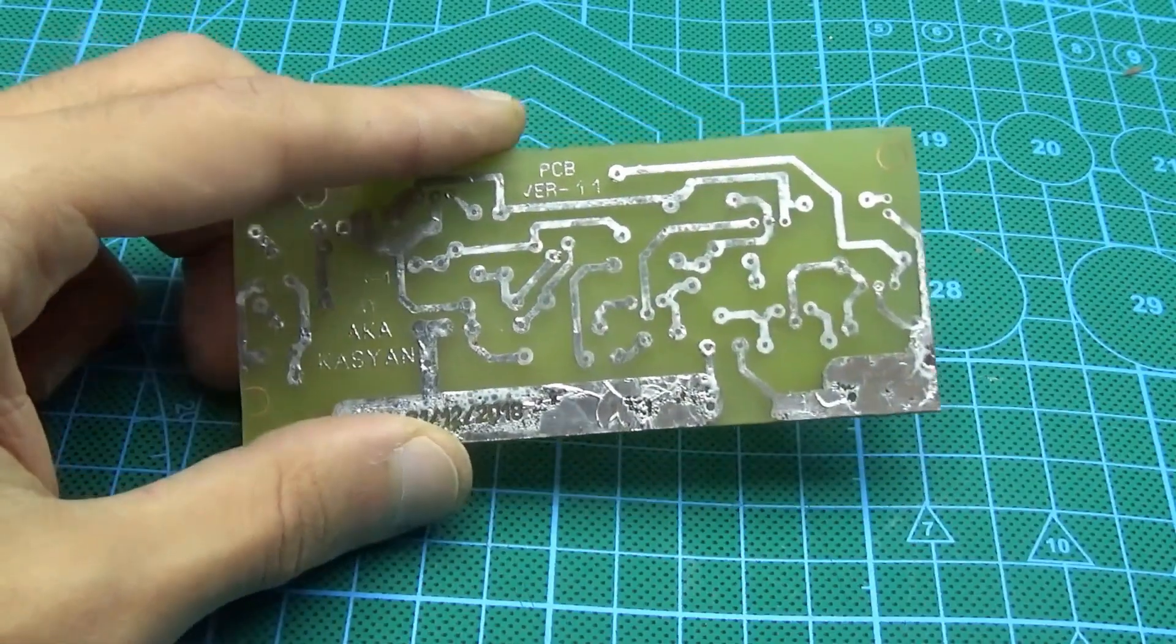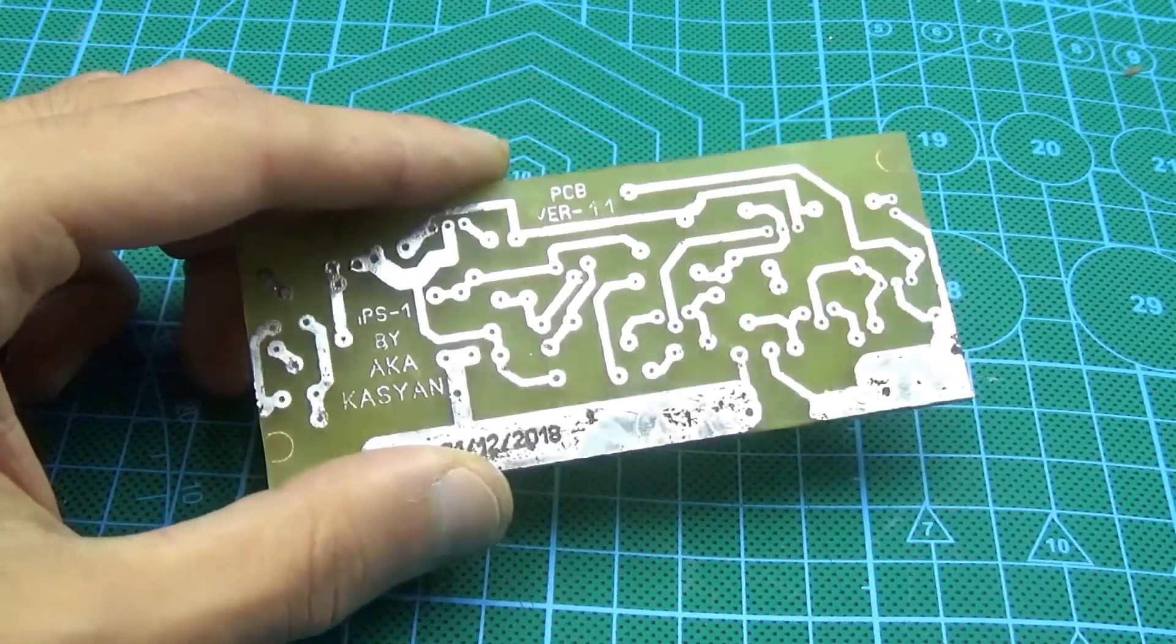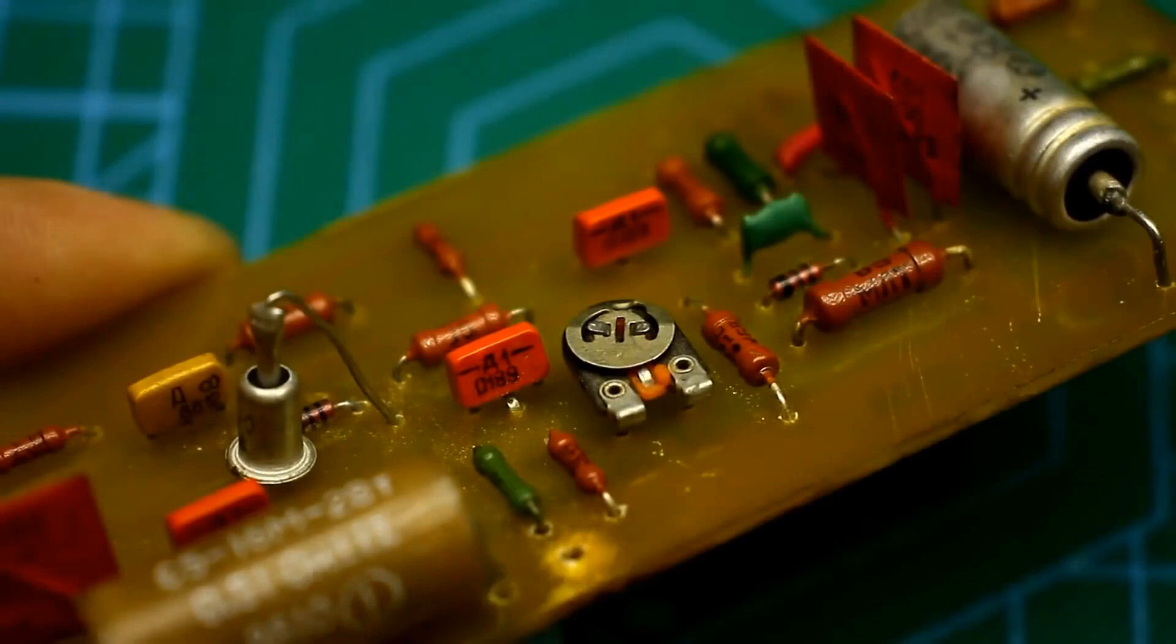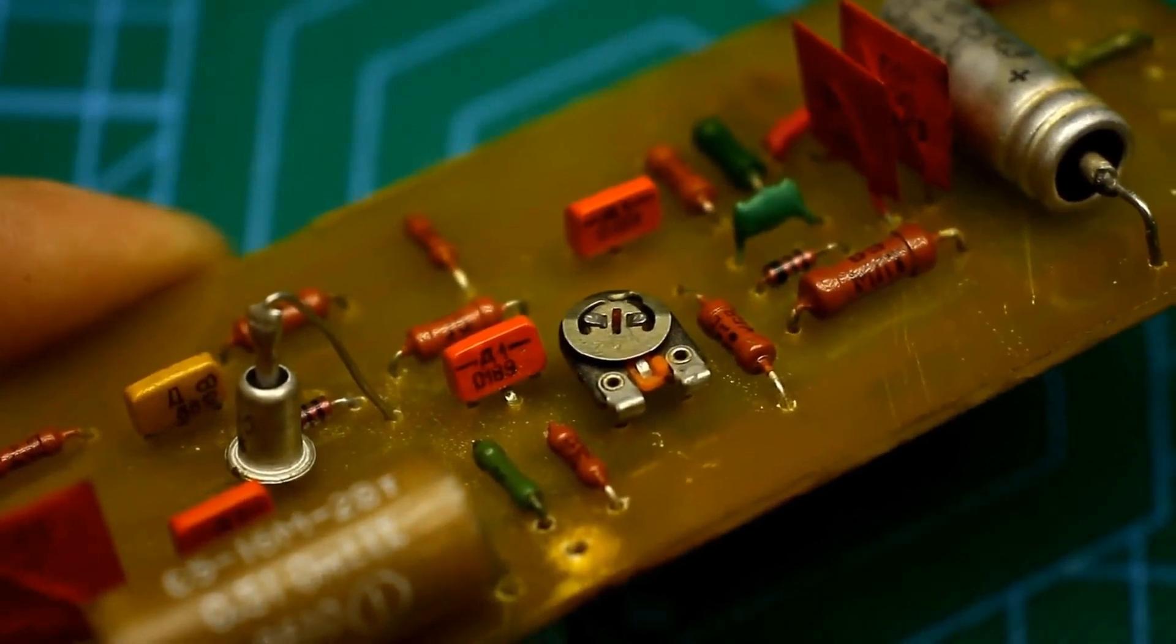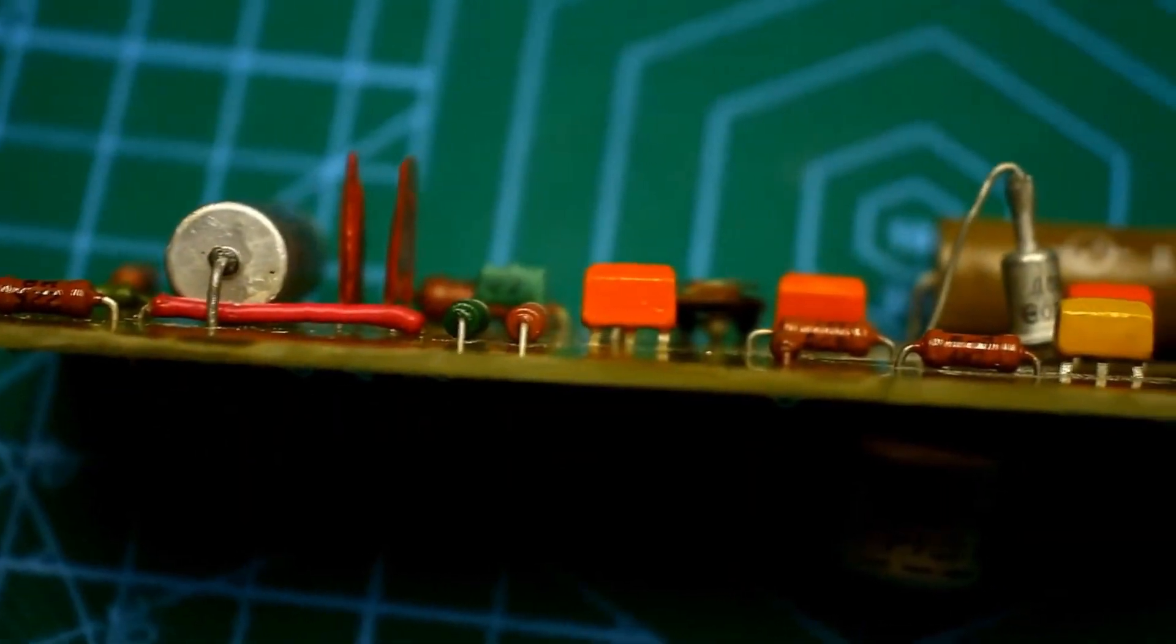You can download the printed circuit board with the project archive via the link in the description. With that, I have to say goodbye. As always, this was Cassianoka with you. Until we meet again.